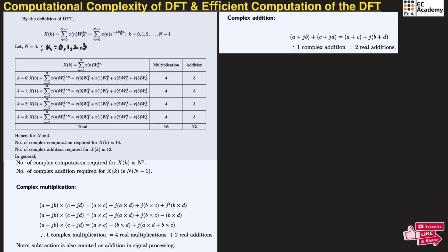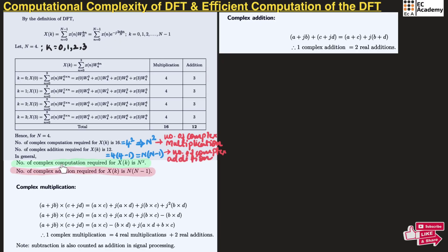This 16 can be written as 4 squared, so in general we can write this as N squared — N squared is the number of complex multiplications. This 12 can be written as 4 into 4 minus 1, which is 3 into 4 equals 12. So since N equals 4, we write this as N into N minus 1. In general, the number of complex multiplications required for x of k is N squared and the number of complex additions required is N into N minus 1.